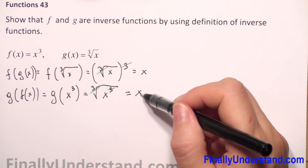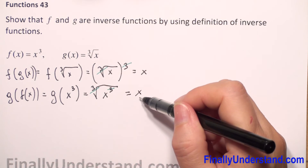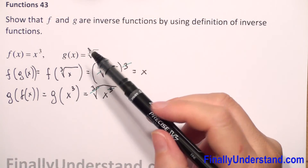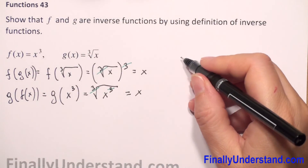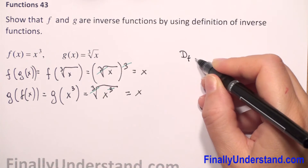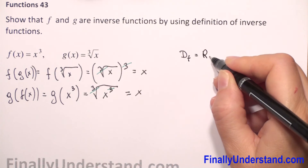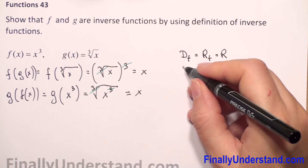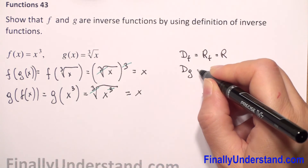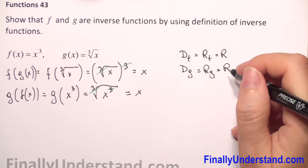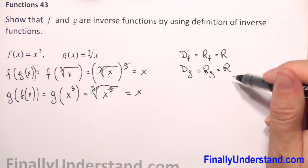This also equals x, so we get the identity function again. Next, we check the domain and range of f and g. The domain and range of f are all real numbers, and the domain and range of g are also all real numbers. The domain of f equals the range of g, and the range of f equals the domain of g, so everything checks out.